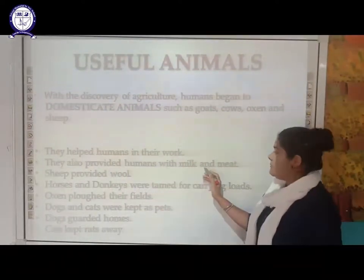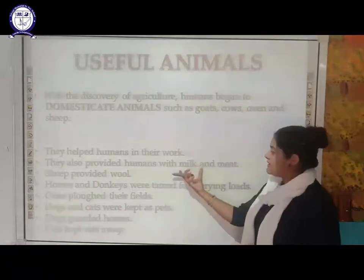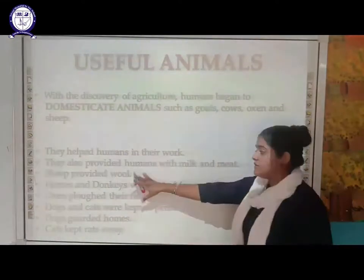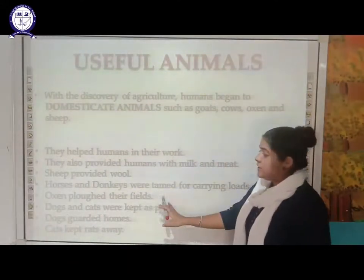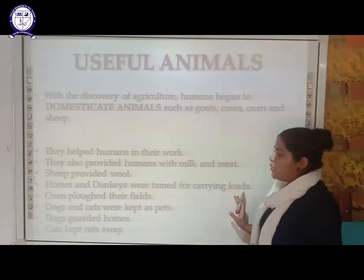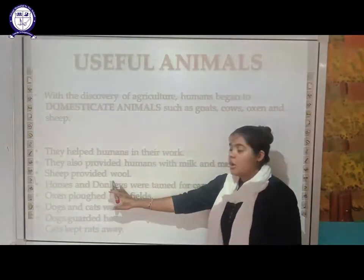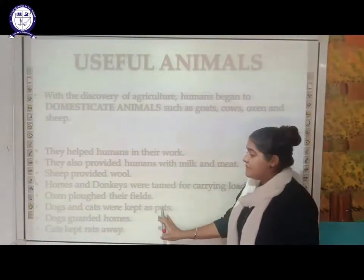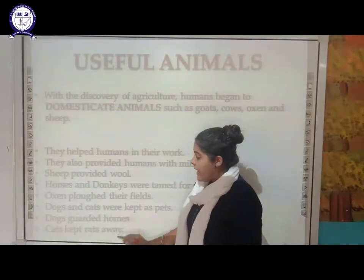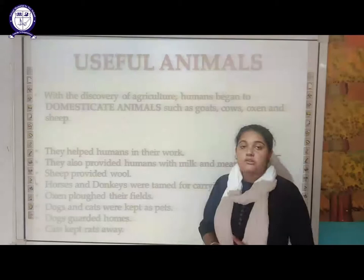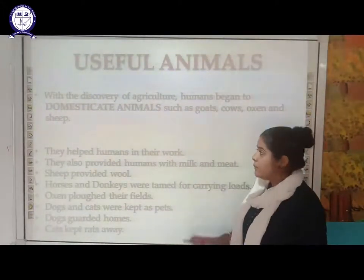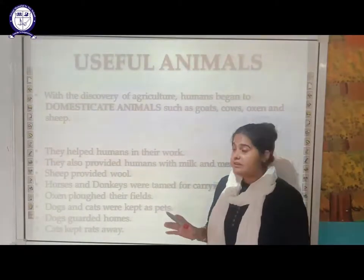Animals also provided humans with milk and meat. Sheep provide us wool, from which we make woolen clothes required in winter. Ox plowed the fields for agricultural purposes. Horses and donkeys were trained for carrying the load from one place to another. Dogs and cats were kept as pets — dogs guarded the house and cats kept the rats away.